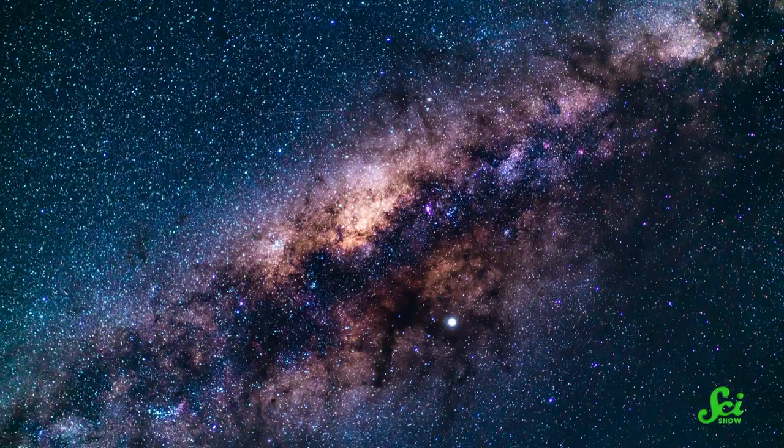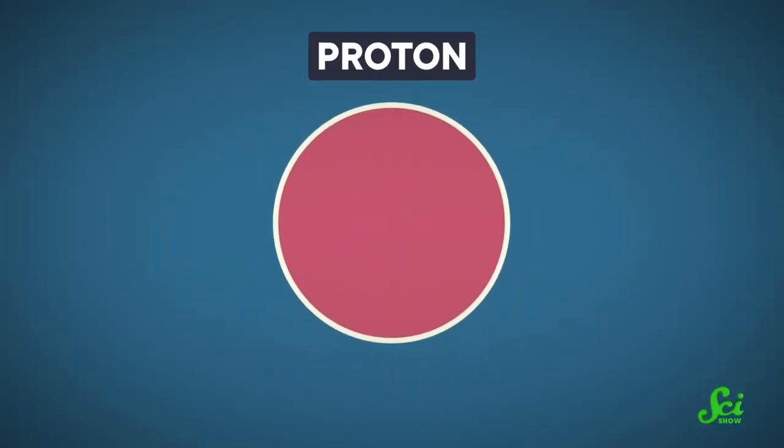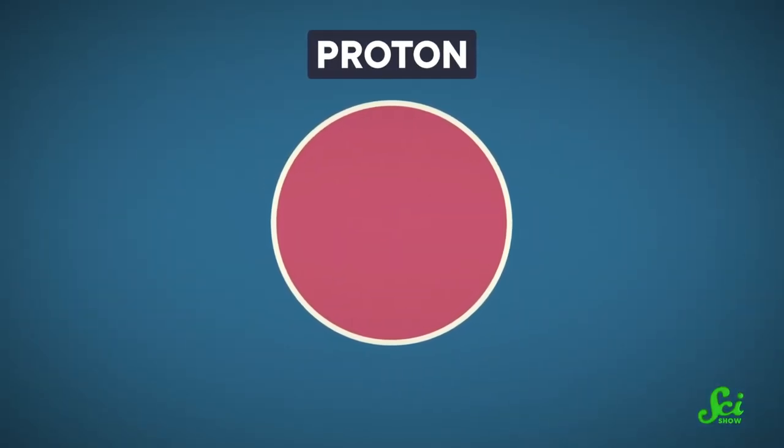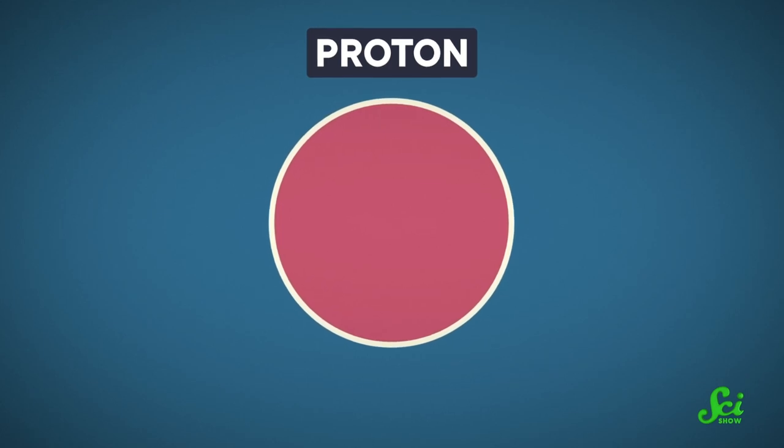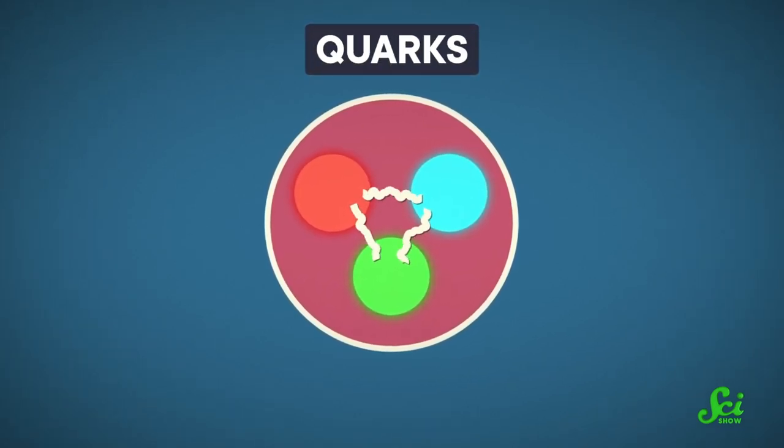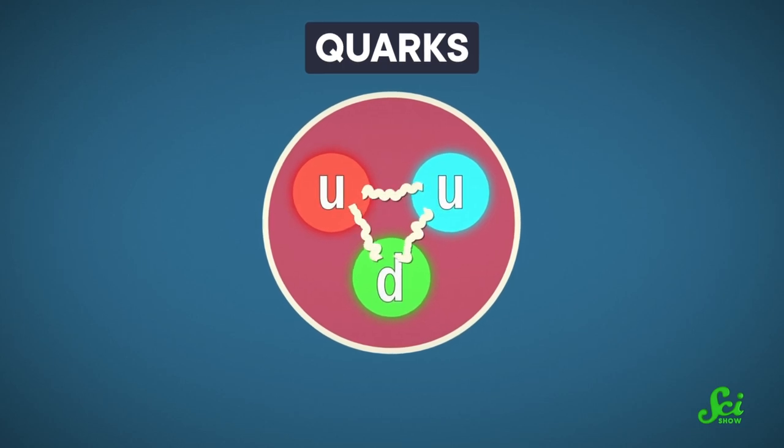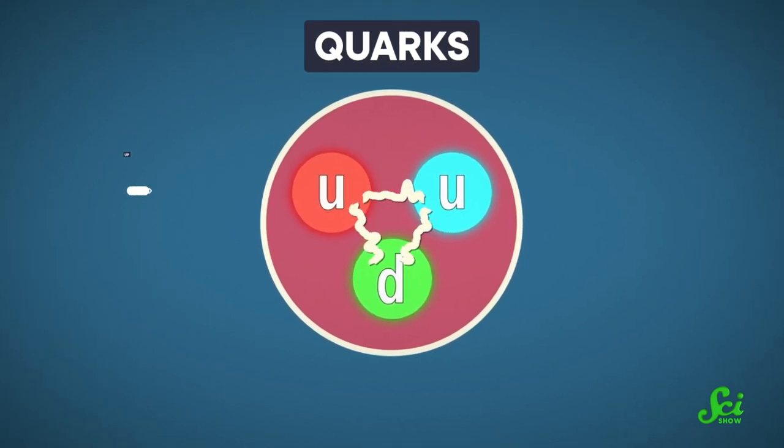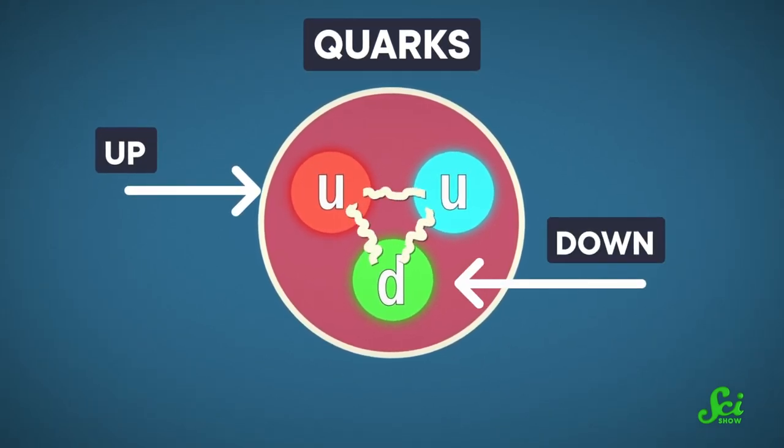Every atom in the universe has at least one proton inside of it. In fact, protons make up most of the regular matter out there. And thanks to decades of particle physics research, we know that protons are made of even smaller particles called quarks. Specifically, protons are made of two fundamental flavors of quark—up-flavored quarks and down-flavored quarks.